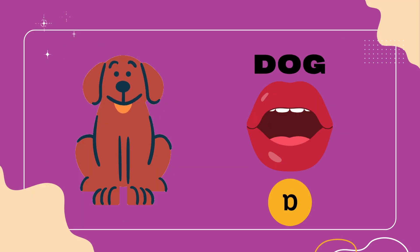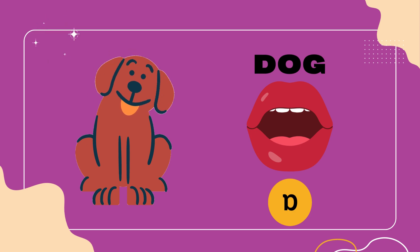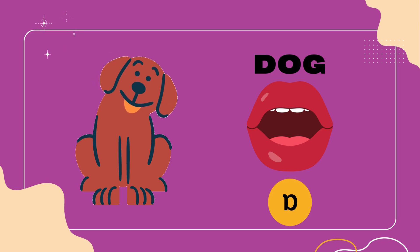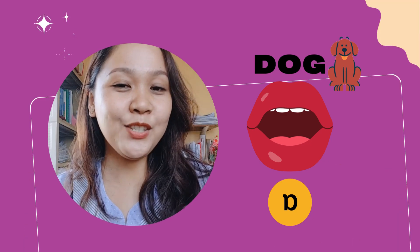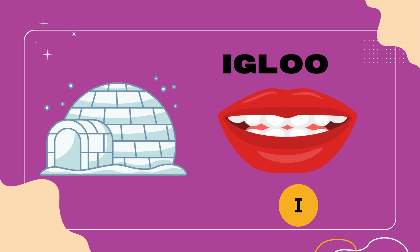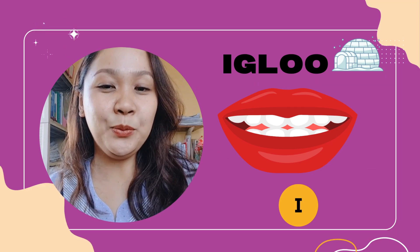Moving on to dog, which demonstrates the OW sound. When saying dog, your mouth is slightly open and the tongue is low and towards the back of the mouth. Let's try it together: Dog. Now, let's look at igloo, representing the E sound. This sound is produced with a relatively relaxed mouth and the tongue in a high and front position. Say it with me: Igloo.